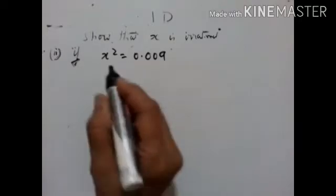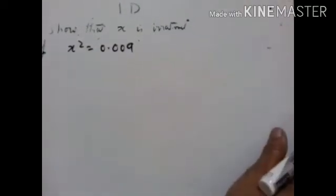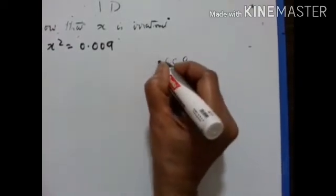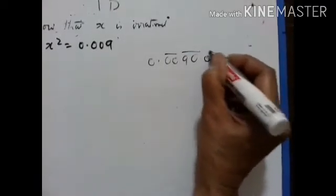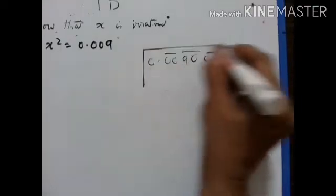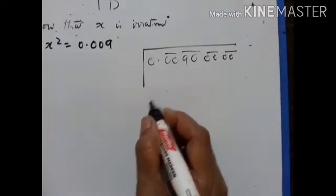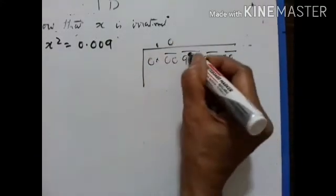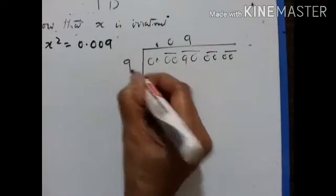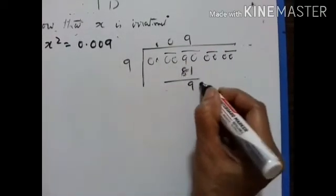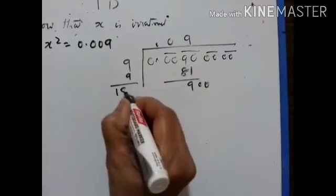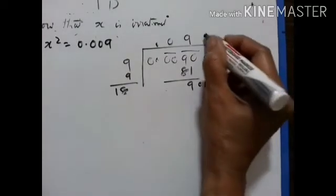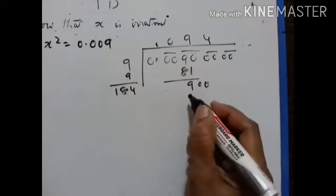Show that x is irrational if x squared is equal to 0.009. Let us take the square root of 0.009. Starting the long division — 0.0909... 9 is 81. What can we take now?